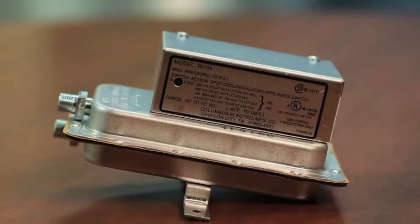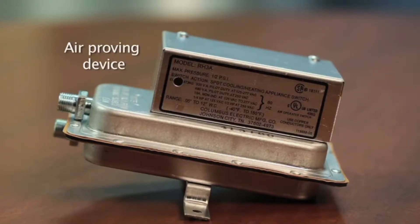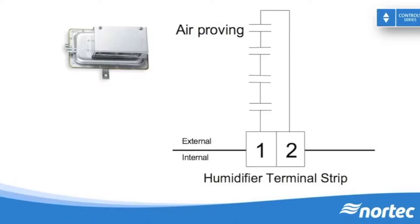Just as the name implies, the air-proving device indicates if the supply duct is provided with airflow, since we only want to provide steam to a duct that has air movement. These devices are traditionally on-off, which means they use a set of dry contacts and either close or open between the contacts. On-off devices are wired in series with each other and must complete the humidifier security loop.